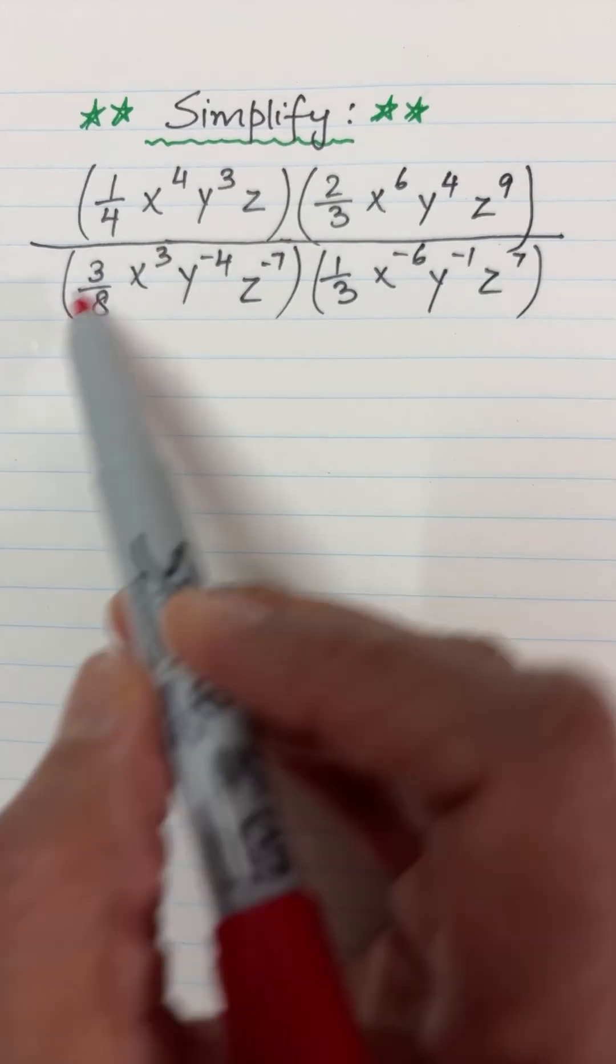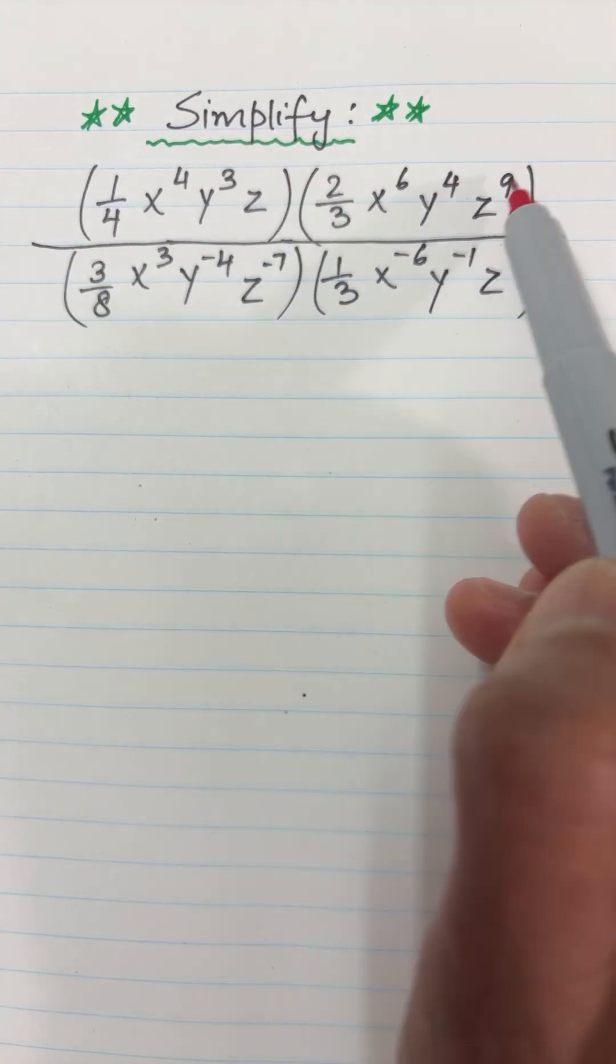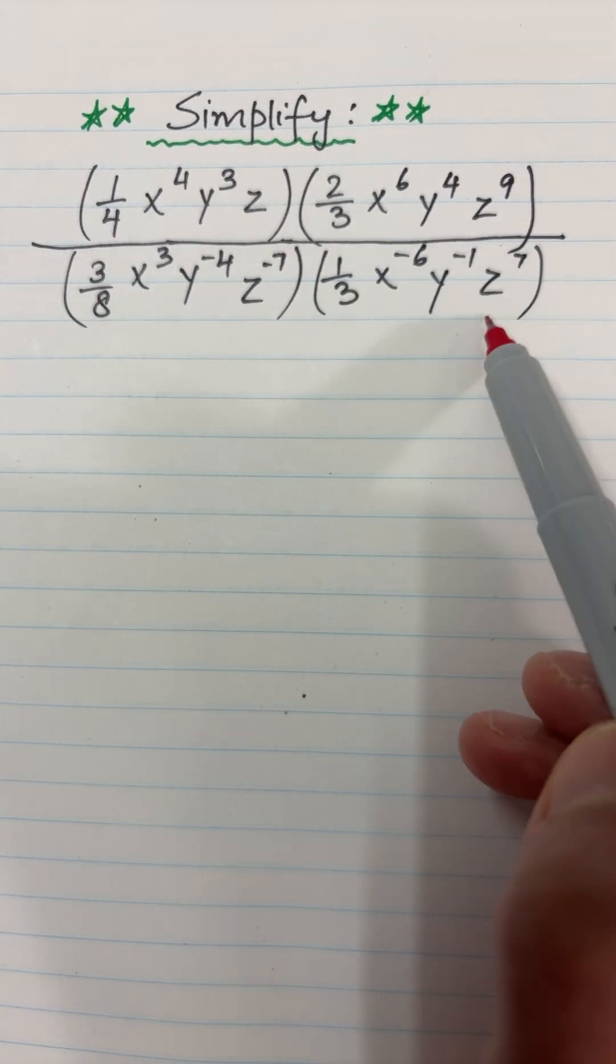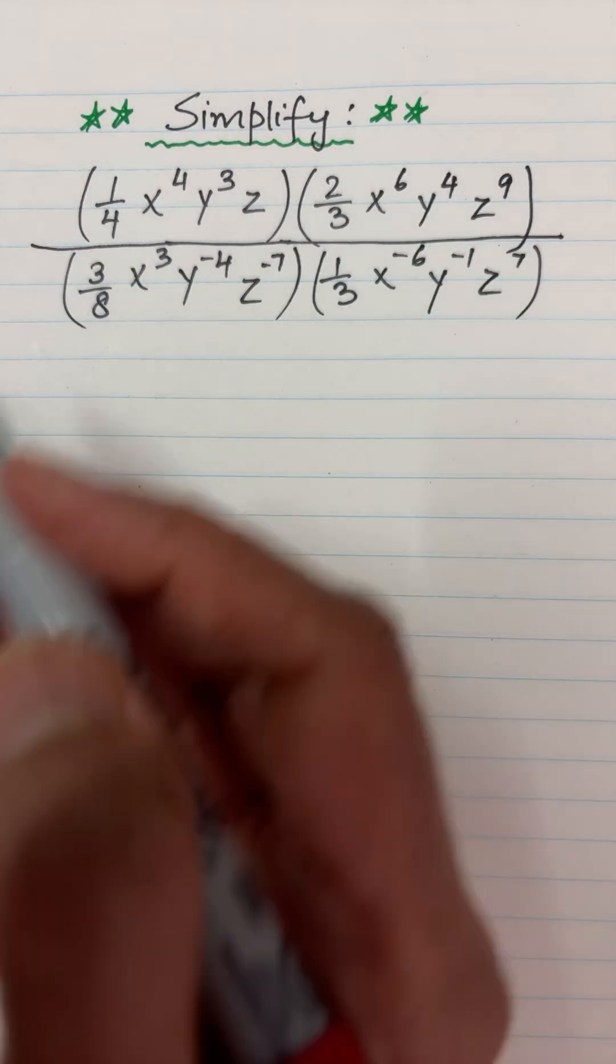Simplify this expression. If we look closely at this expression, this bracket is being multiplied by this bracket, this bracket in the denominator is being multiplied by the terms of this bracket, and then finally they are divided.